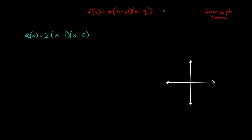Let's finish up with intercept form: f of x equals a times the quantity x minus p times x minus q. These two numbers tell you the zeros of your parabola — where the x-intercepts are — but you take the opposite sign. For a of x equals 2 times x plus 1 times x minus 5, the zeros are at x equals negative 1 and x equals positive 5. With a positive 2 out front, we know the parabola opens upward.